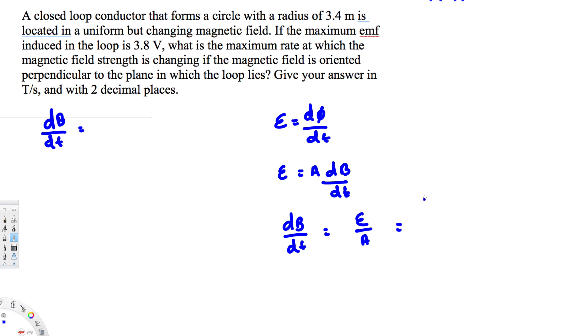Here, since we are dealing with a loop that's circular, that's πr². And the emf is provided, that is 3.8 volts. So 3.8 divided by πr², and the radius we know, the radius is provided, that is 3.4 meters.